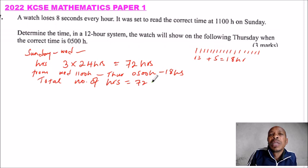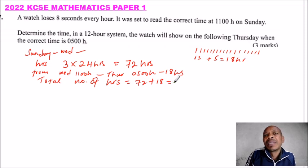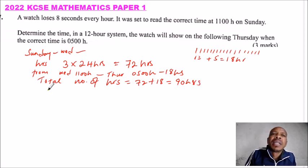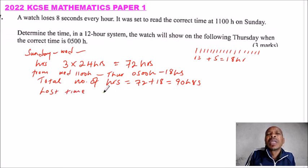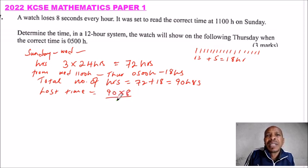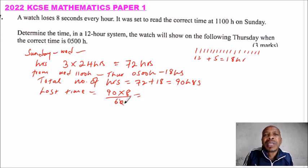The total number of hours is 72 plus 18, which equals 90 hours. Since the watch loses 8 seconds every hour, the total time lost equals 90 multiplied by 8 seconds, divided by 60 to convert to minutes. Simplifying this gives us 12 minutes lost.